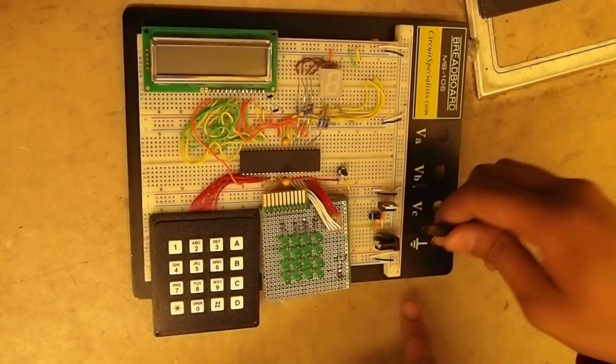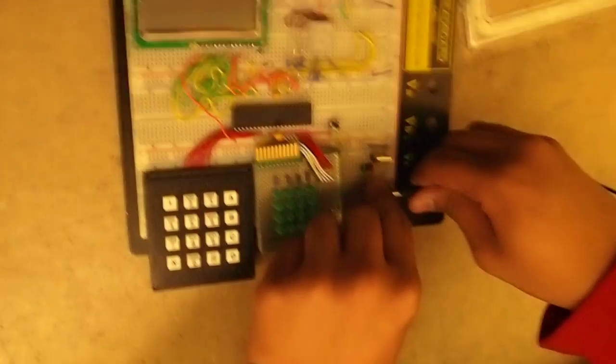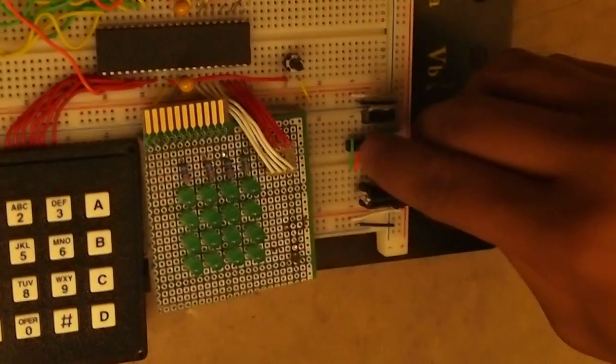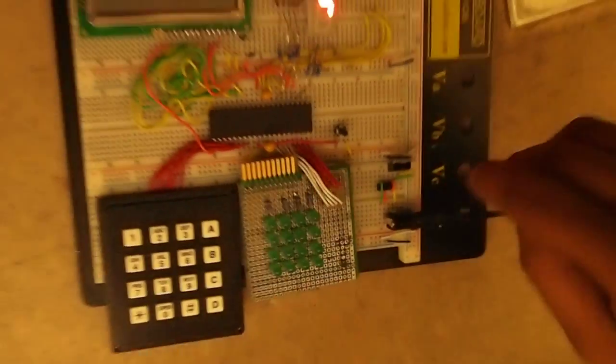This here is my power supply. I have a 12 volt output right here. This is my voltage regulator. I have my switch here to turn it on. I'm going to turn it on right now. That turns on my game.